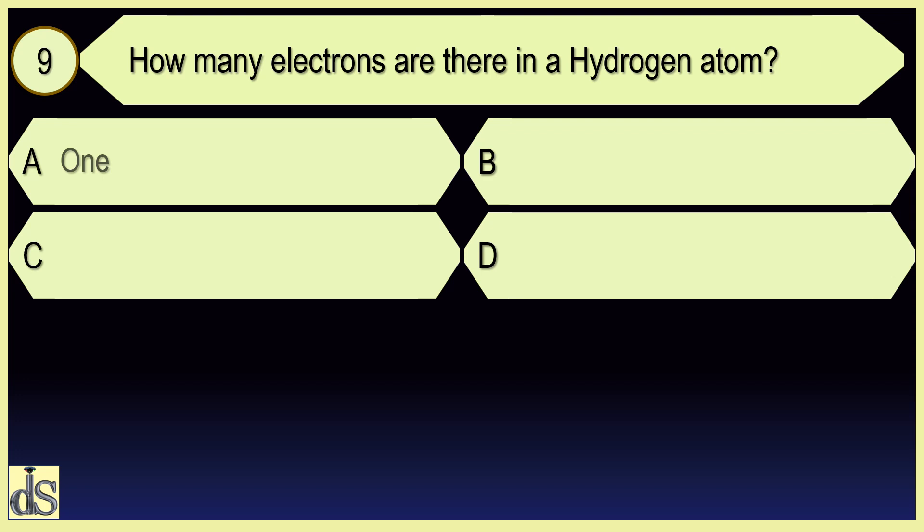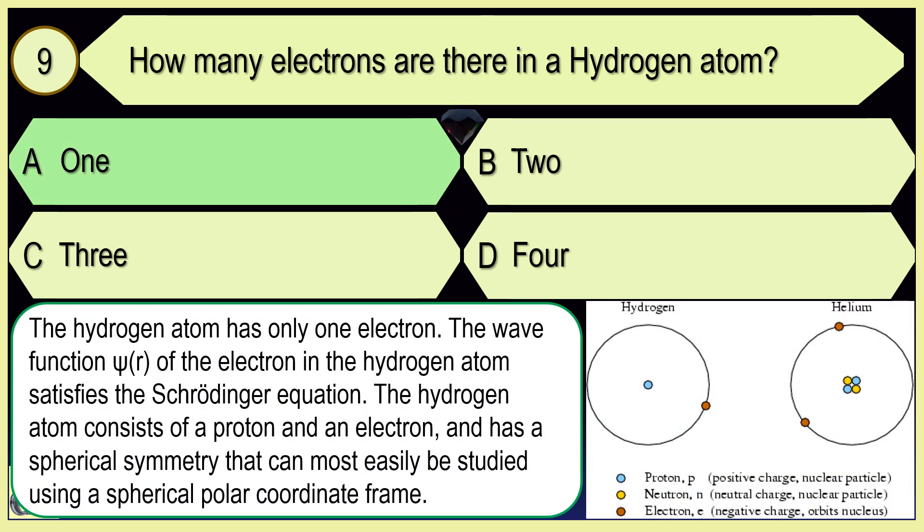How many electrons are there in a hydrogen atom? One.